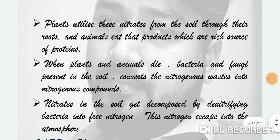Plants utilize these nitrates from the soil through their roots. Animals then eat those plant products, which are rich sources of protein, and gain protein from them. When plants and animals die, bacteria and fungi already present in the soil convert the nitrogenous waste into nitrogenous compounds by degrading them.